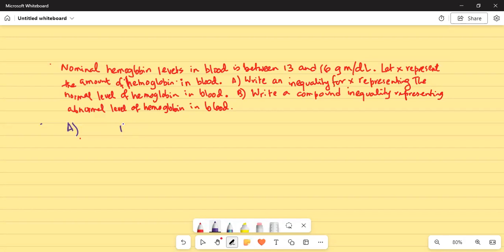It is between 13 and 16. X is the amount of hemoglobin in blood. It is between 13 and 16 inclusive. That's why we have equal to. So, if we were to do it in set notation, it would be 13 close bracket, 16 close bracket.